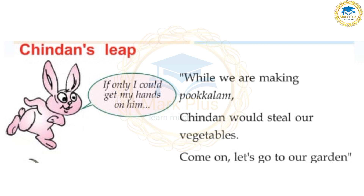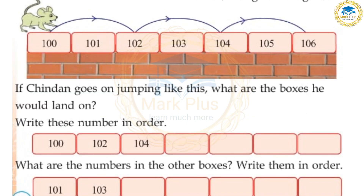We need a picture. Chindan jumped the numbers. If Chindan goes on jumping like this, what are the boxes he would land on? Chindan is in this box. Write these numbers in order.